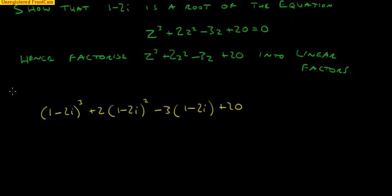So p of 1 minus 2i equals that. And that equals, binomial expression, the coefficients will be 1, 3, 3, 1.